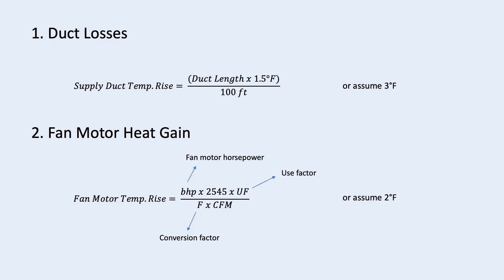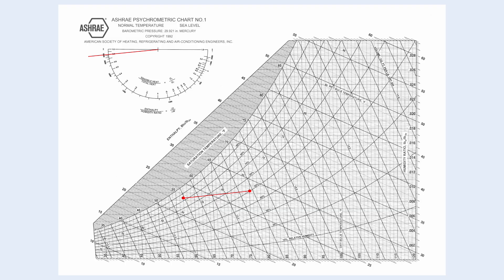So, the total temperature rise is 5 degree Fahrenheit. Now, back to the psychrometric chart, we mark the off-coil temperature at 5 degree Fahrenheit below the supply air temperature.